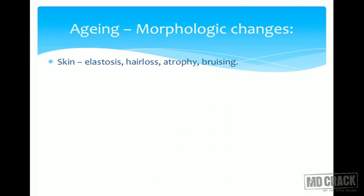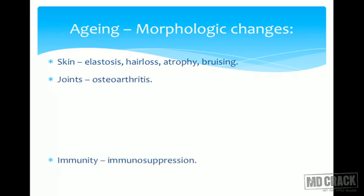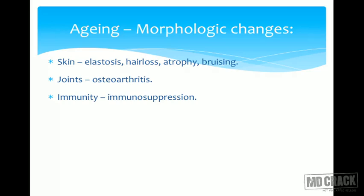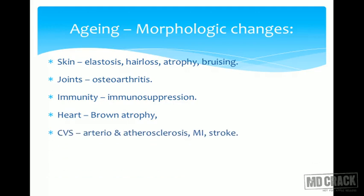Morphological changes in various organs with aging include: skin losing its elasticity (elastosis), hair loss, skin atrophy, and easy bruising. Joints show senile osteoarthritis. Immunosuppression takes place. The heart shows brown atrophy (senile atrophy). Unavoidable atherosclerosis and arteriosclerosis develop, leading to myocardial infarction and stroke. Neoplasms develop, as increasing age is a major risk factor for malignancy. The CNS undergoes cerebral degeneration and memory loss.